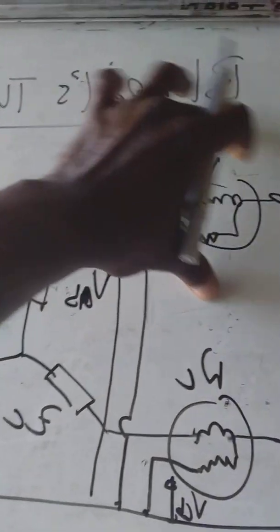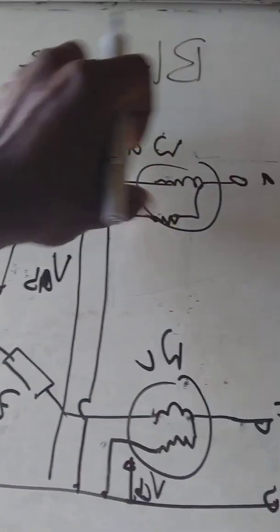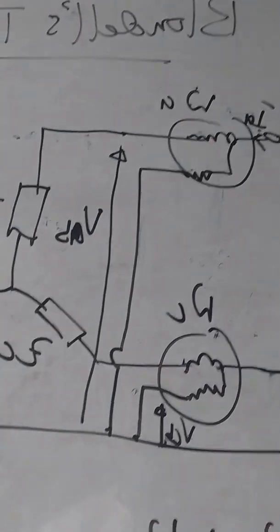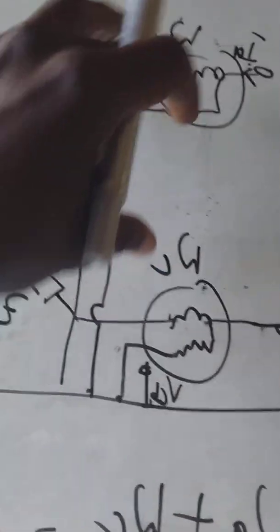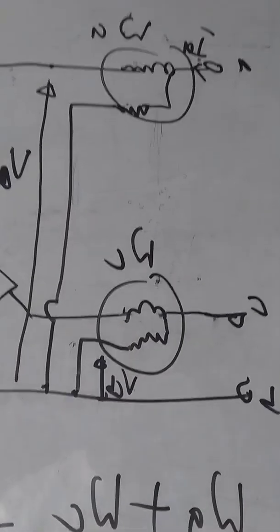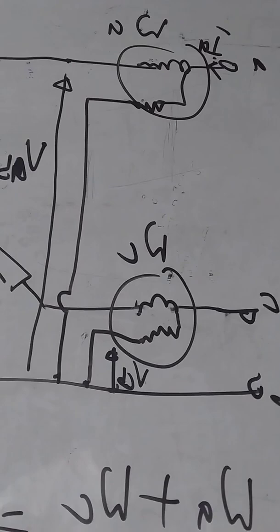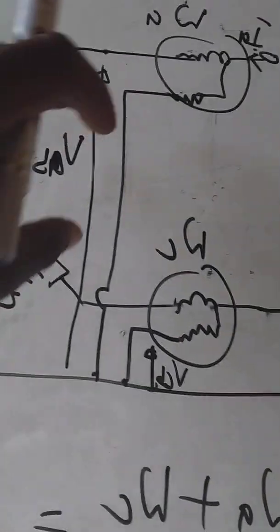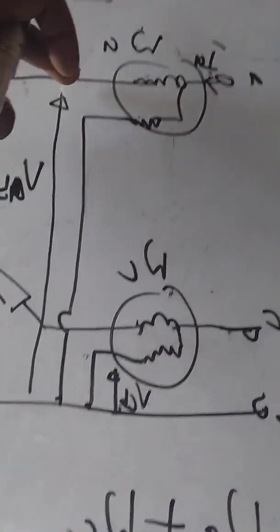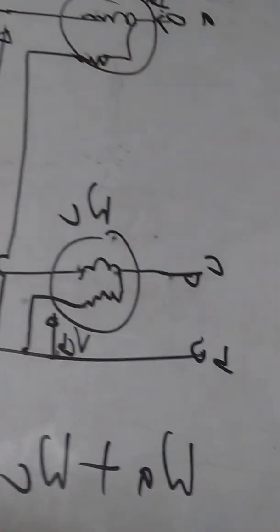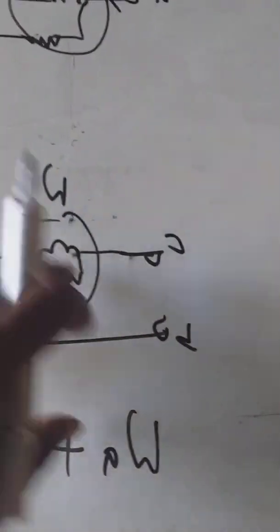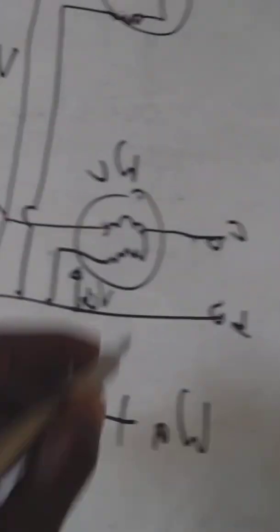The voltage across the second wattmeter is connected to C and B, which is V_CB. So W_A is V_AB times I_A, and W_C is V_CB times I_C. The total power W_A plus W_C equals V_AB · I_A plus V_CB · I_C.